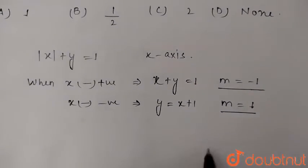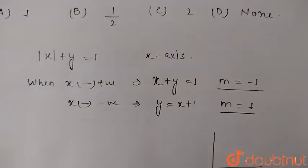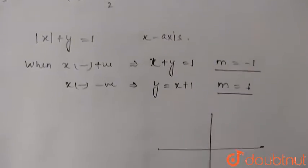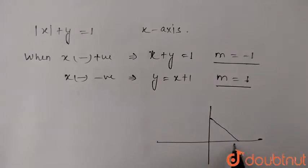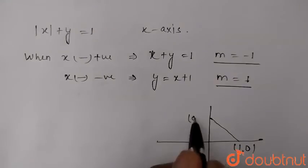So, observing it on the graph, we will get when x is positive, m is -1, so drawing, this is our line x + y = 1. So this is (1,0) and this is (0,1).